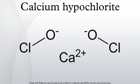Calcium hypochlorite reacts with carbon dioxide to form calcium carbonate and release chlorine monoxide: Ca(ClO)2 + CO2 → CaCO3 + Cl2O. A calcium hypochlorite solution is basic.